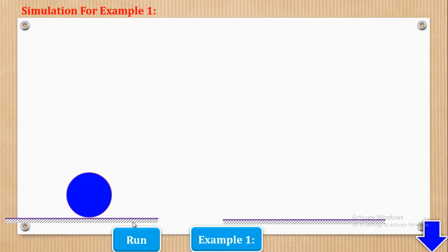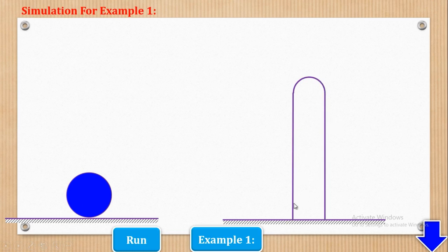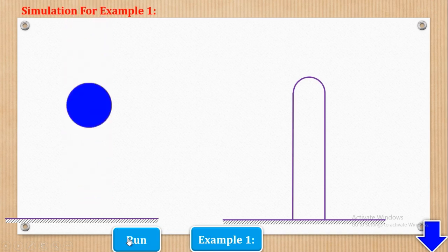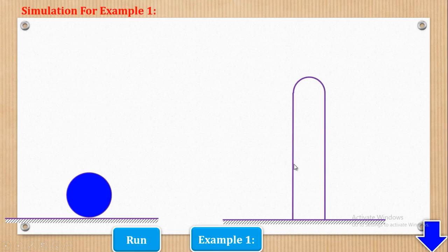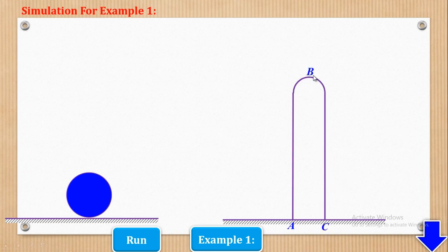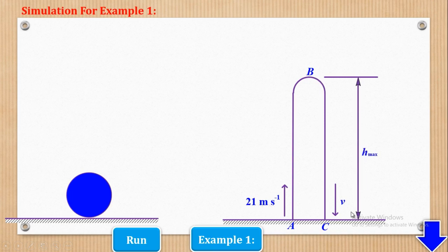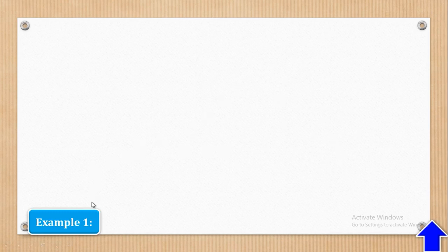If we are to make a sketch for that, we shall draw something like this. We leave a space between the upward motion and downward motion lines just to distinguish the two, even though the line going upwards is the same line on which it returns back to the ground, as you can see in the simulation. For a sketch, we leave some distance so that we can easily show upward motion and downward motion. We shall call the starting point A, maximum point B, and return point C. Therefore, the initial velocity will be 21 meters per second, maximum height is H max, and the velocity with which it hits the ground will be V.